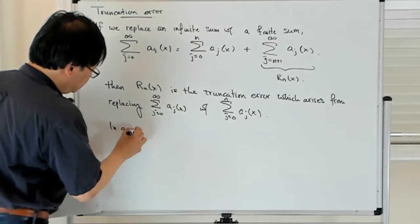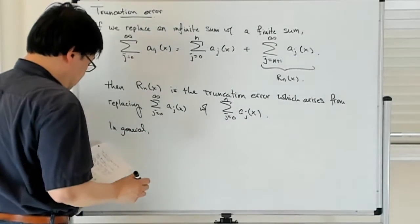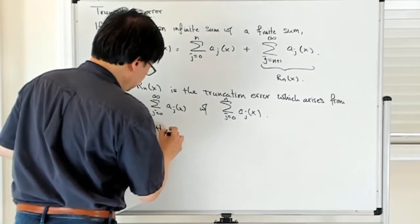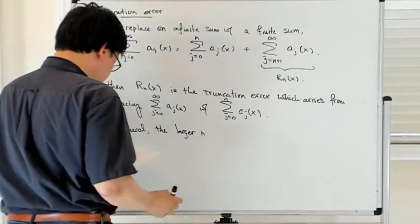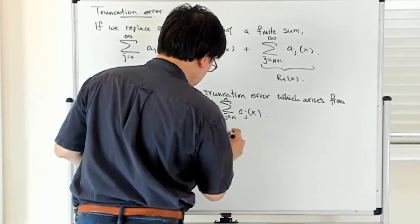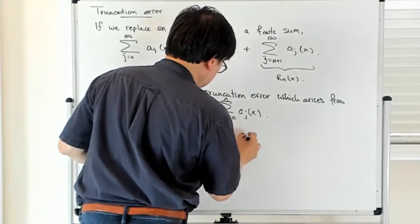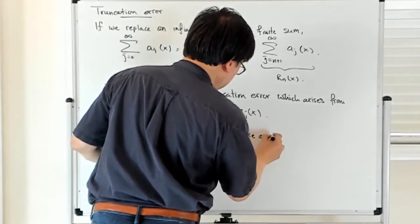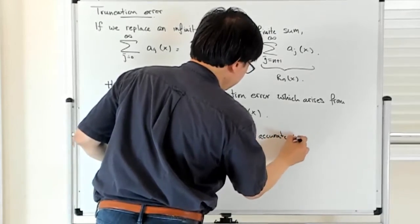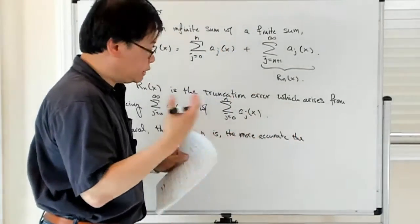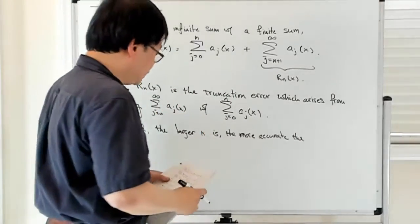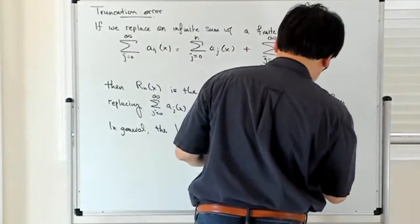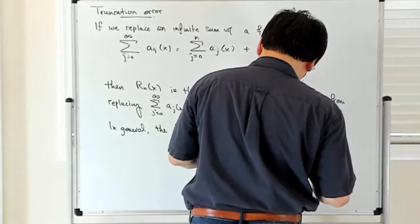the larger n is, the more accurate the approximation. This is not always true, but under nice conditions, this is true. It's more accurate, the approximation.